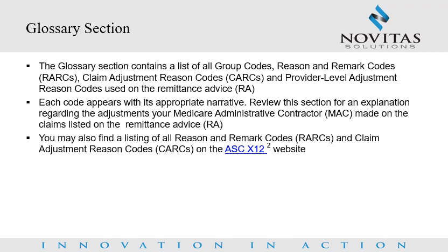Glossary section. The glossary section contains a list of all group codes, reason and remark codes, claim adjustment reason codes, and provider level adjustment reason codes used on the remittance advice. Each code appears with its appropriate narrative. Review this section for an explanation regarding the adjustments your Medicare administrative contractor made on the claims listed on the remittance advice. You may also find a listing of all reason and remark codes and claim adjustment reason codes on the Washington Publishing Company's website.